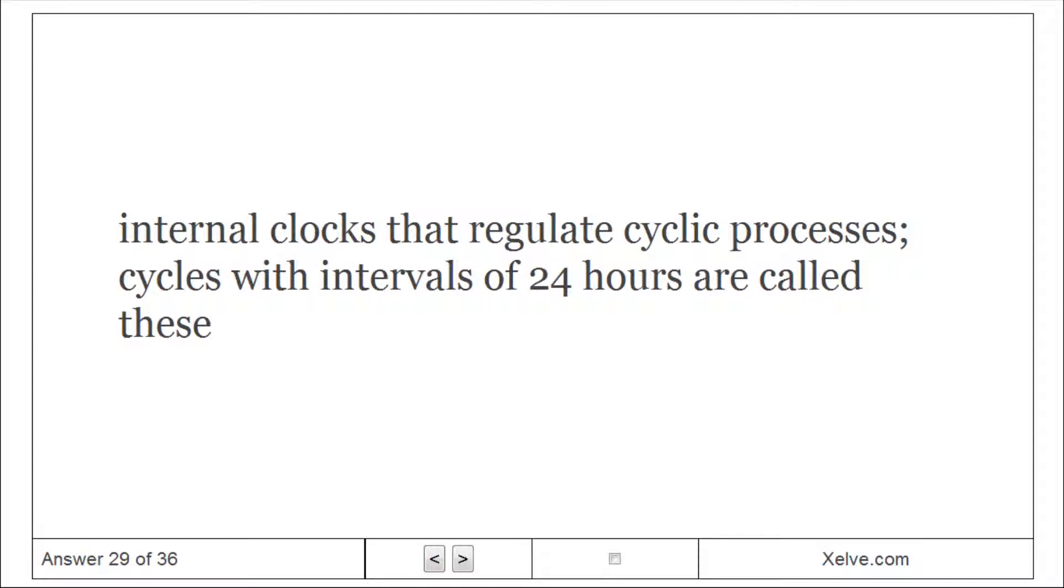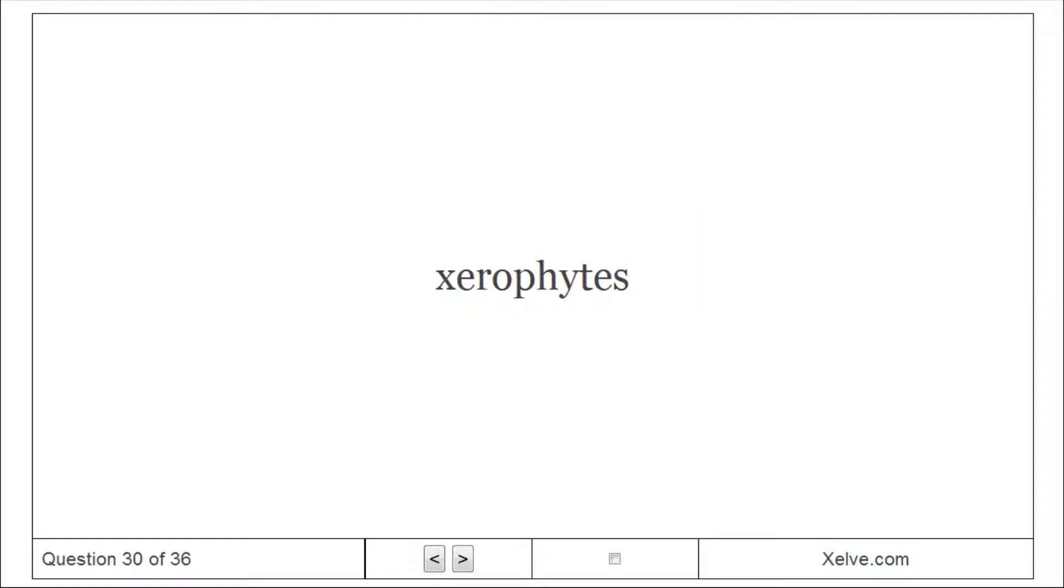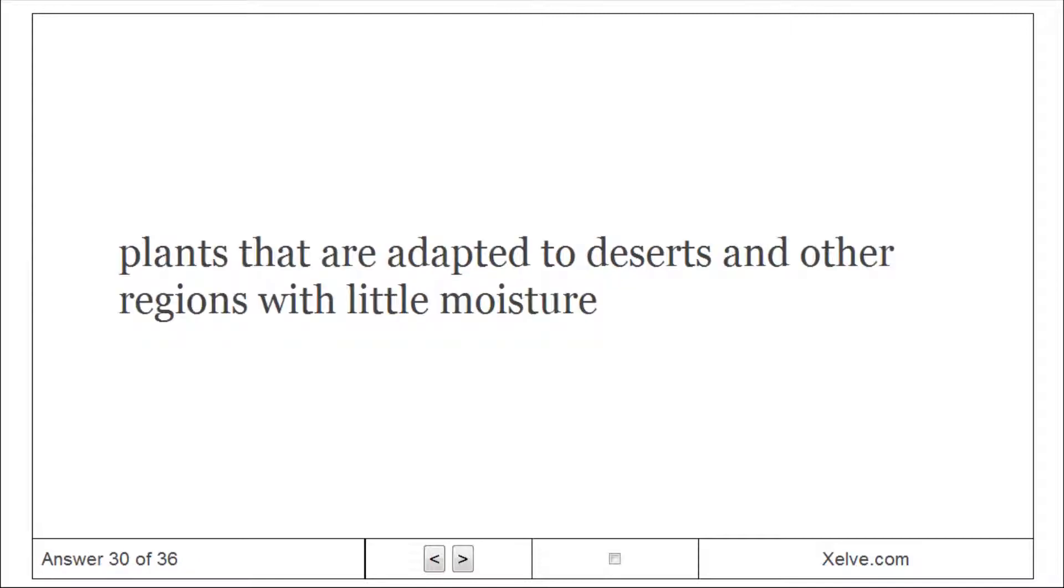Circadian Rhythms: Internal clocks that regulate cyclic processes. Cycles with intervals of 24 hours are called these.